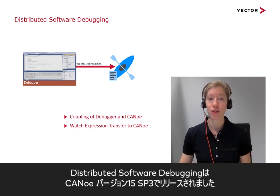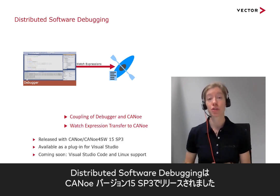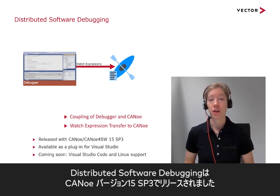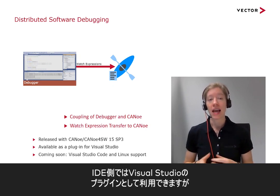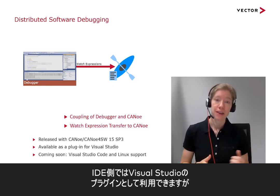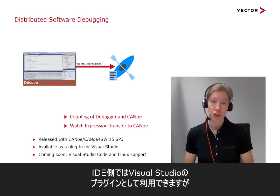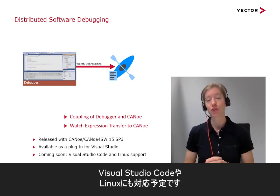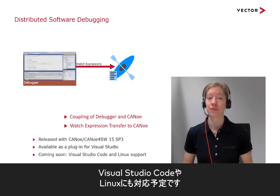Distributed software debugging was released with Canoo 15 in Service Pack 3. On the IDE side it's available as a plugin for Visual Studio, with Visual Studio Code and Linux support coming soon.